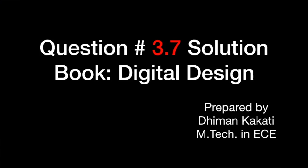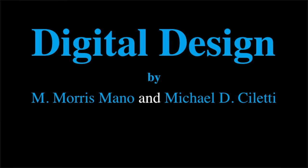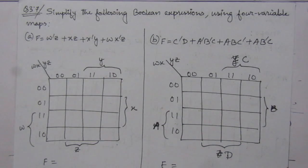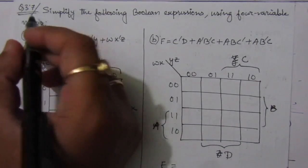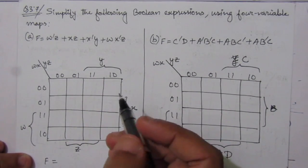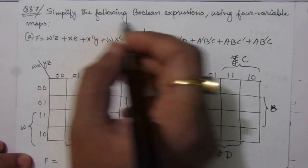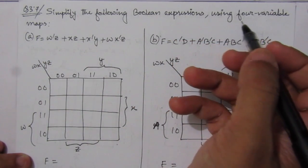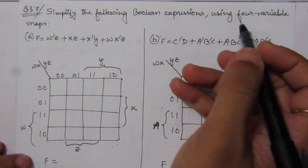Dear students, I welcome you all to this problem solution series in digital electronics. I am solving the problems from the book Digital Design by Morris Mano and Michael C. Letty. In this video I am solving problem number 3.7 from chapter number three. The problem is to simplify the following boolean expressions using four variable maps.